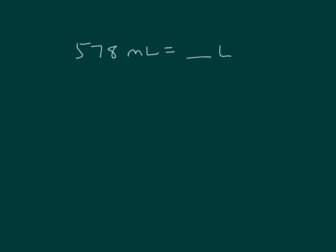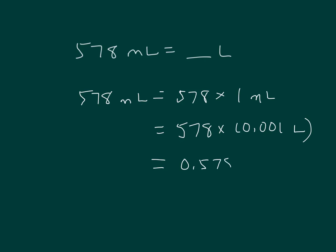578 milliliters equaling blank liters. 578 milliliters equaling 578 times 1 milliliter. Our conversion is there are 1,000 milliliters in a liter. So we write here 1/1000 of a liter. Work that out. That's 0.578 liters. And I'll write that out. So 578 milliliters equals 578/1000 of a liter.